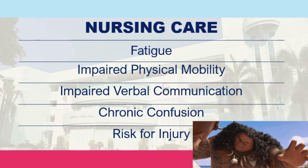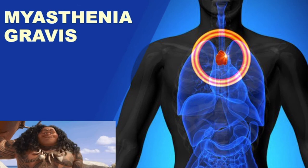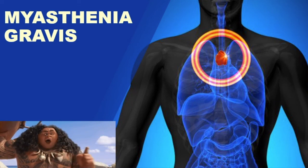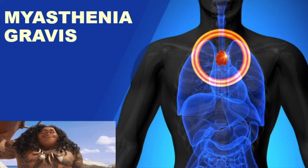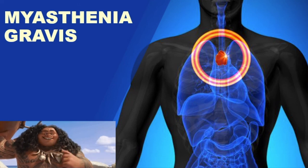Increase fluid intake and eat a balanced diet — specifically low-fat, high-fiber. In summary, multiple sclerosis involves demyelination of the CNS, referring to the brain and spinal cord. The next topic to be discussed is myasthenia gravis. Thank you for your attention.